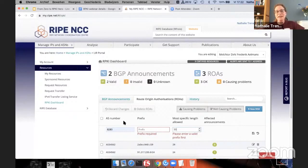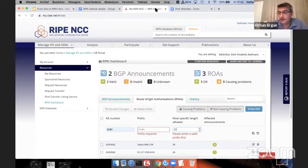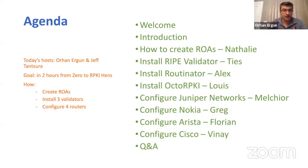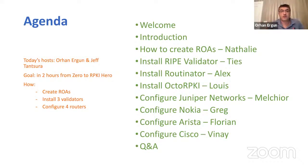That concludes my demo. Now we've seen how to create a ROA. We will start installing three different validators as I told you: RIPE, Routinator, and OctoRPKI. Please show us how to install the RIPE validator. We will see prefixes there from the five different regional internet registries. All validators will show similar entries — maybe different implementations, but at the end the number of states will be almost the same in all validators.